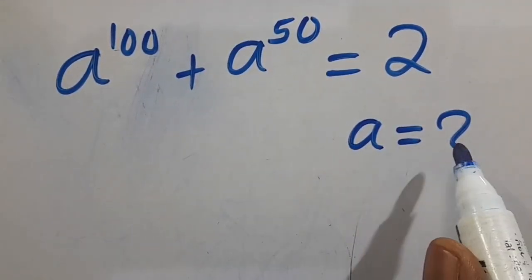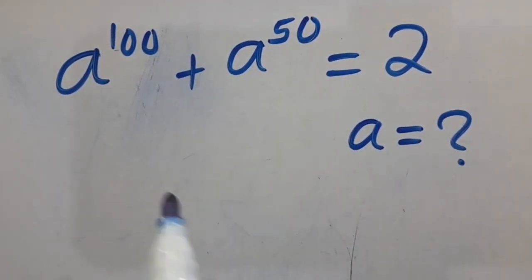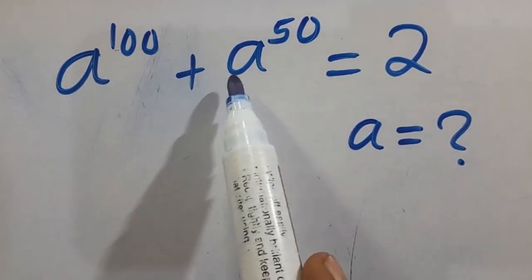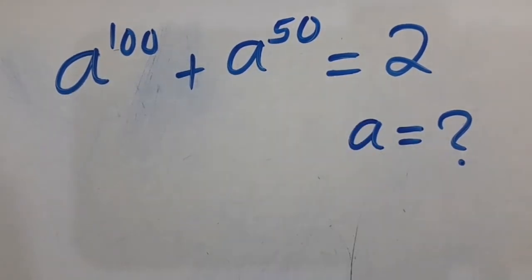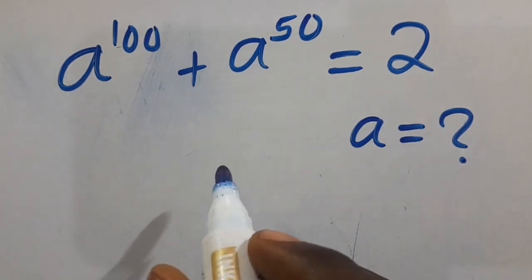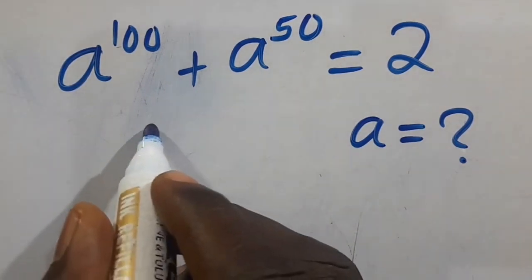Hi, what is the value of A, given that A to the power of 100 plus A to the power of 50 equals 2? Let's go to the solution.